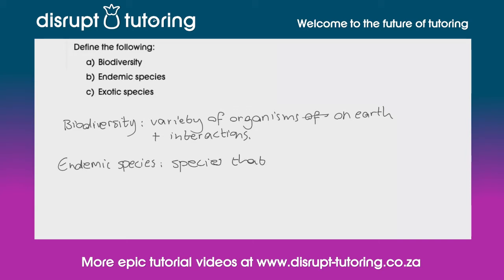Next, endemic species. Endemic species refers to species that occur in a particular region and nowhere else in the world.